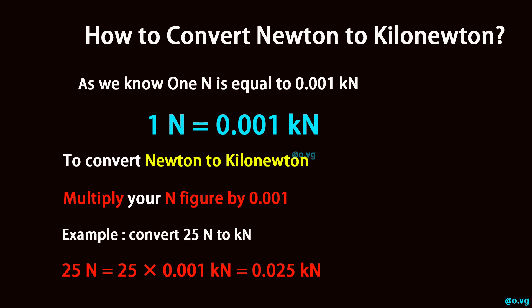To convert newton to kilonewton, multiply your newton figure by 0.001. For example, convert 25 newton to kilonewton: 25 newton equals 25 times 0.001 kilonewton, which equals 0.025 kilonewton.